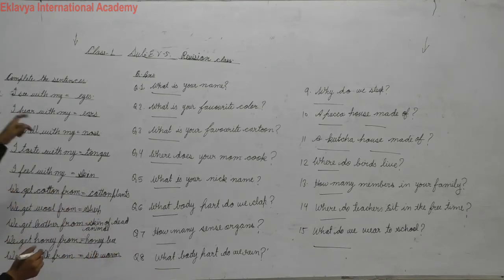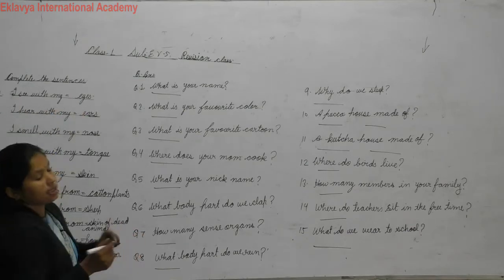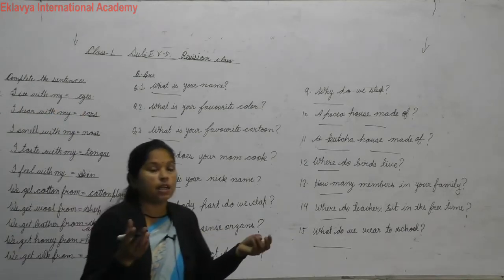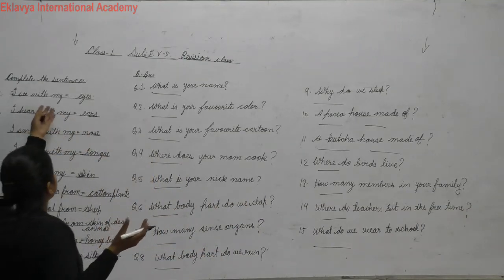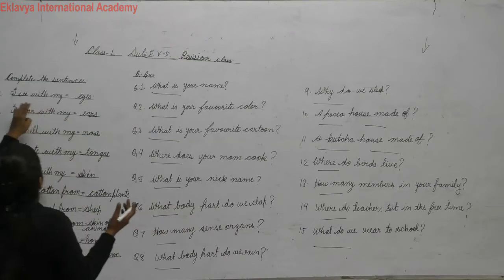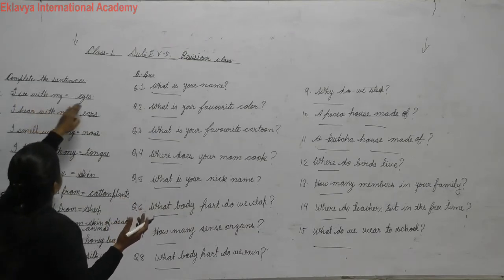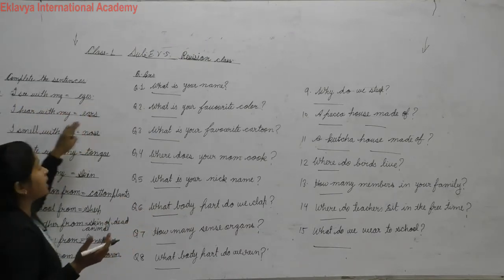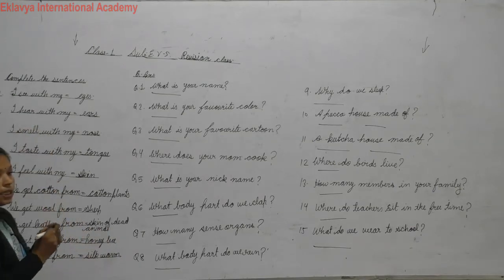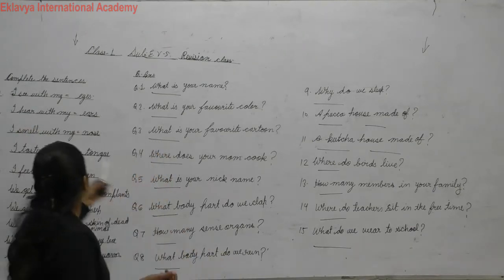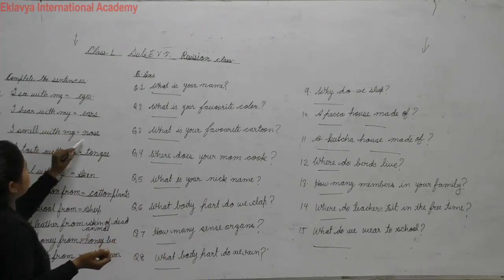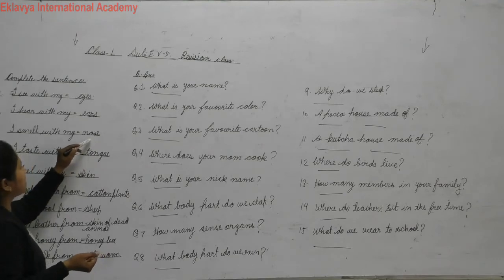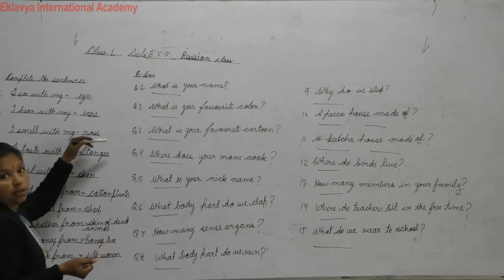I repeat again — complete the sentence. I see with my eyes — wherever there are good looking pictures, a garden and everything. I hear with my ears — songs, sounds. I smell with my nose — flower smell, good smell, and your mother in the kitchen making dishes.